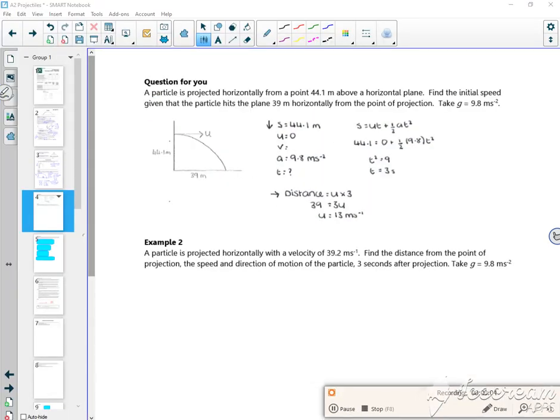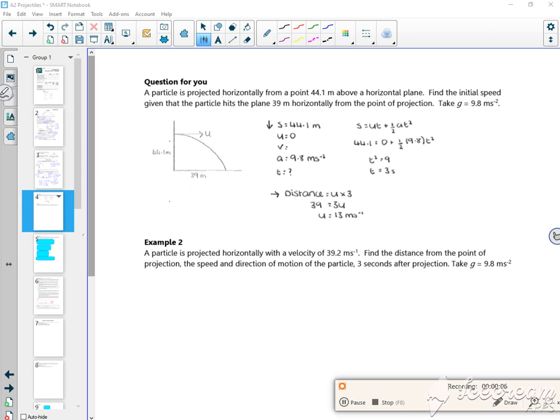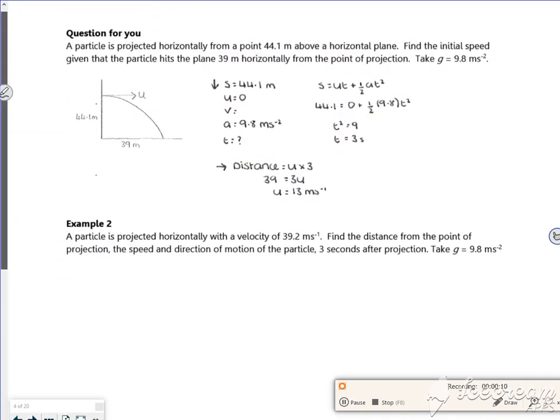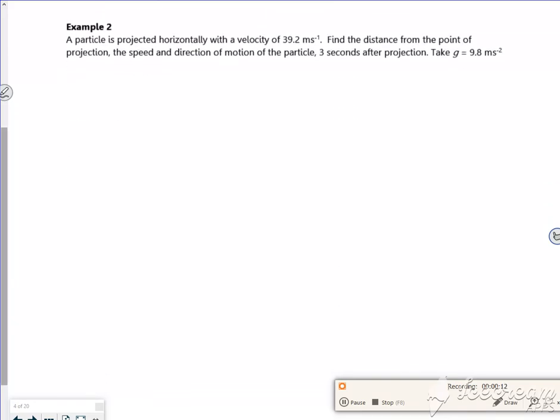Hiya, so next video. There's a question for you which I've just revealed from that example before. So let's have a look at this one then. A particle is projected horizontally with a velocity of 39.2 meters per second. Find the distance from the point of projection and the speed and direction of motion three seconds later.